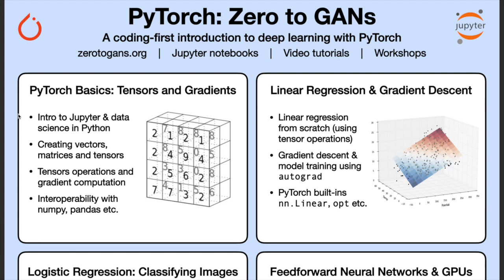We will begin by looking at the basics of PyTorch, which is tensors and gradients. We will get an introduction to Jupyter notebooks and data science libraries in Python. We will create some vectors, matrices, tensors, and perform tensor operations and gradient computations on them. And we will see how PyTorch interoperates with popular data science libraries like NumPy and pandas.